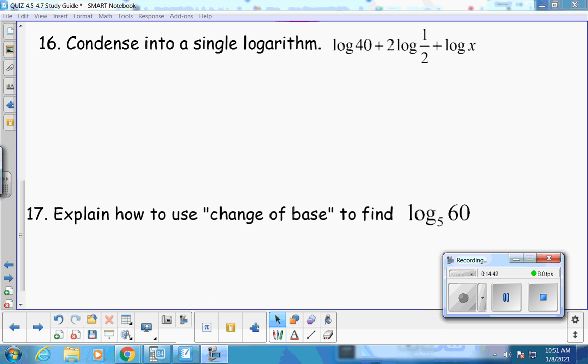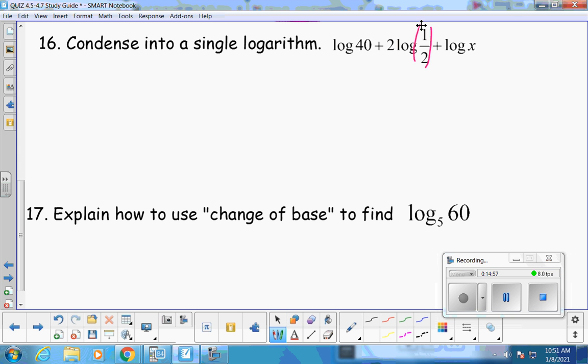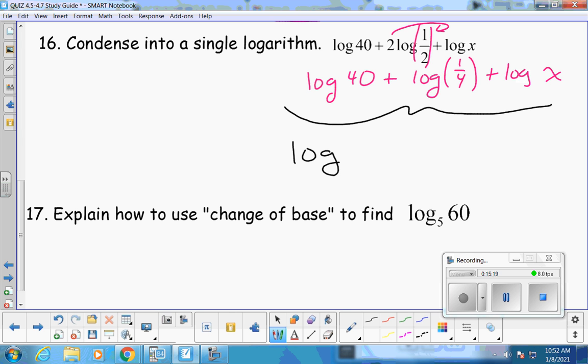Okay, for number 16, we need to do number 15 in reverse. So we're taking multiple logarithms and condensing them down. So start with your frogs. Do you see any frogs? The 2. The 2 is your frog. So the 2 is going to become the exponent of the 1 half. So you have to do 1 half squared. Can you do 1 half squared in your head? 1 half squared. Good job. And now we're going to combine things. Since these are all additions, they're all just going to multiply with each other. So you can do 40 times 1 half squared times X. What's 40 times 1 half squared times X? 10 X. Good. And that's it.